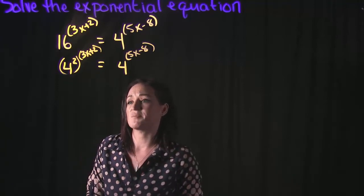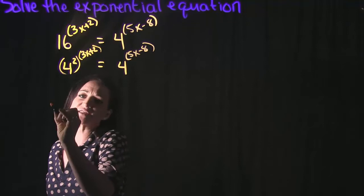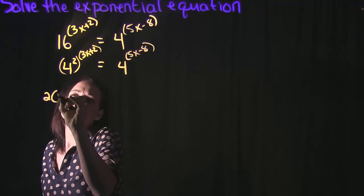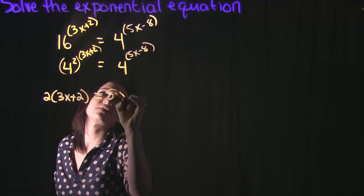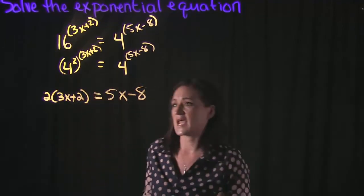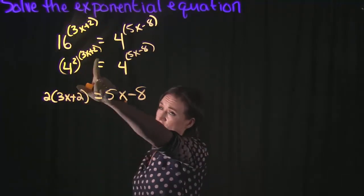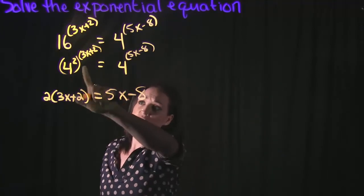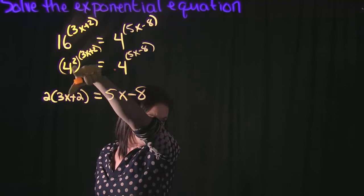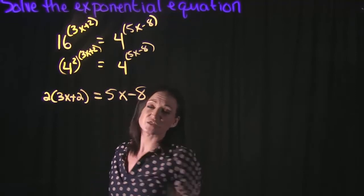Now that we have the same bases, I'm going to take the exponents and set them equal to each other. That means I'm going to take the 2 times the 3x plus 2 and set that equal to the 5x minus 8. The 2 gets multiplied to the 3x plus 2 because of the power rules—exponent raised to another exponent gets multiplied together.